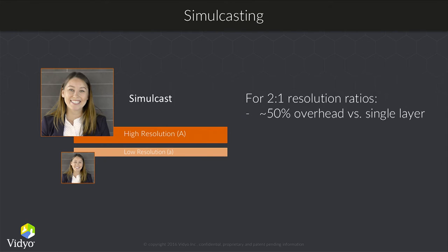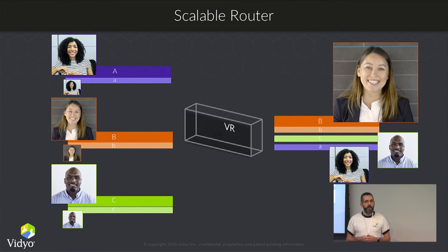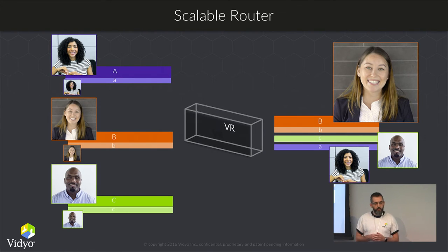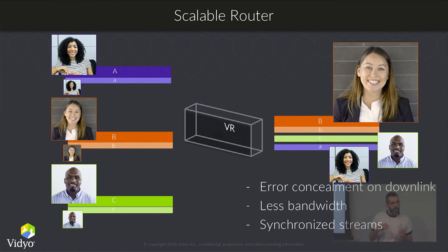A better approach is to use a scalable router. This is something Video has been building for over 10 years, and something we are working to ensure VP9 has in its future. In a scalable router, you only send one stream, but the earlier interdependency gets broken up so you can choose frame rate and resolution by just picking packets out of that single stream. A scalable router delivers the benefits of both an MCU with a single stream and simulcast, adding error concealment and utilizing less bandwidth.